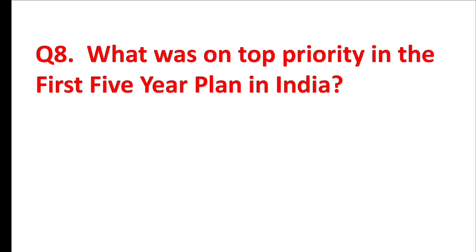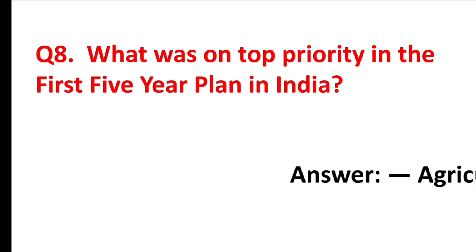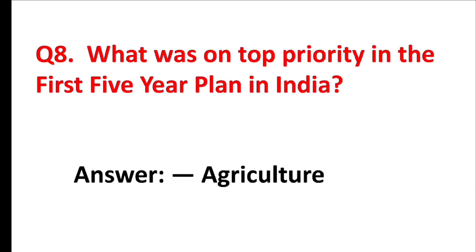What was on top priority in the first five-year plan in India? Answer is: Agriculture.